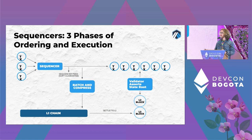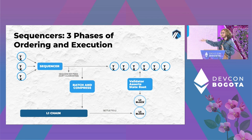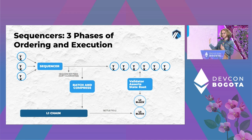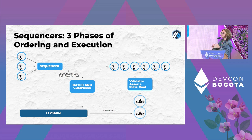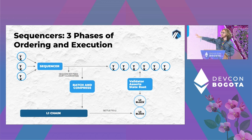When we introduce a sequencer, the lifecycle of a transaction looks like this: the user gives their transaction to the sequencer, the sequencer immediately gives a trusted promise that it will include the transaction later. In Arbitrum's case, every few minutes it posts a batch of transactions on-chain. At that point the sequencer is out of the picture — once it's on chain, we're in full rollup mode with a committed ordering. As far as a user is concerned, your transaction is as finalized as a layer one transaction.